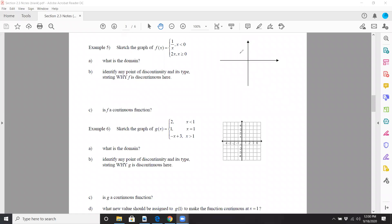Okay, I had misplaced my stylus. So one over x less than zero is going to look like this, and two x where zero is included, it's a pretty steep slope like that. What's the domain? Well, it's all real numbers of course, because nothing is excluded.